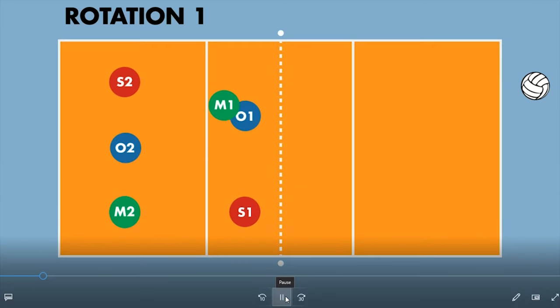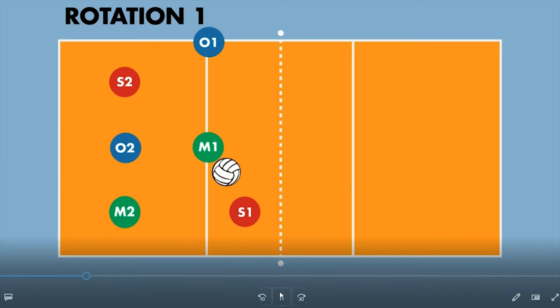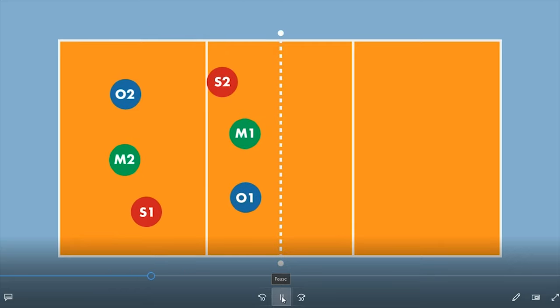The ball is going to be served. The players move outside here, middle here, setter here ready to go. And then your hitter is good. Then we're going to get back to where we were. And we're going to rotate into rotation 2.